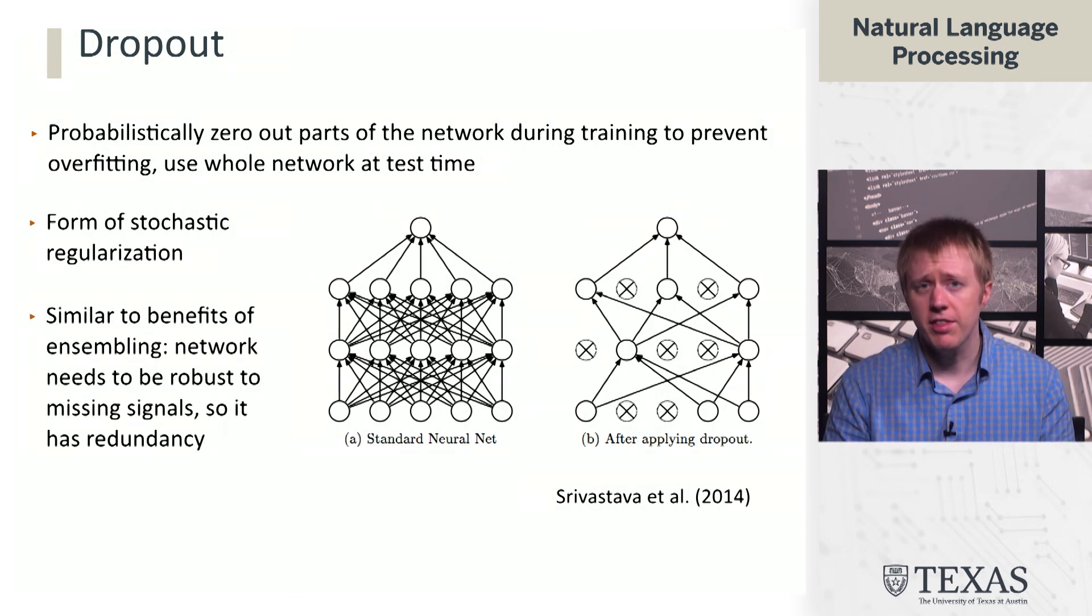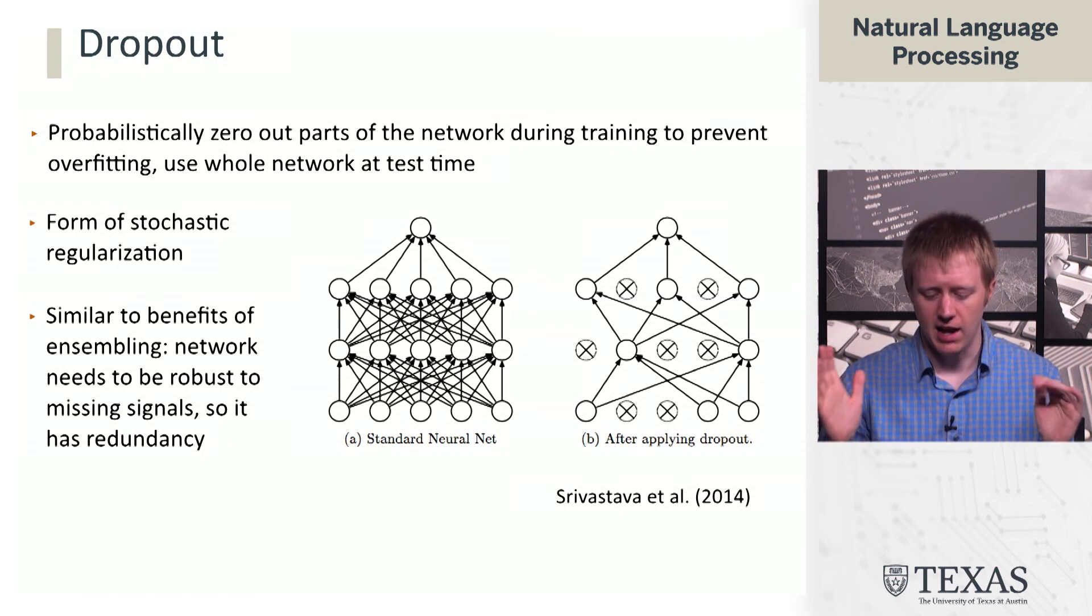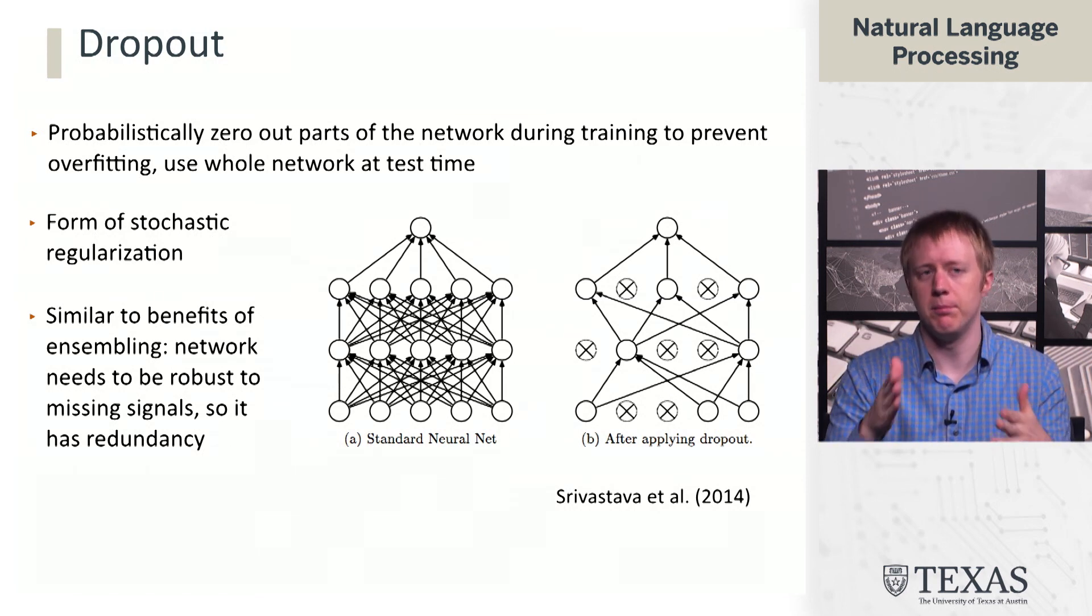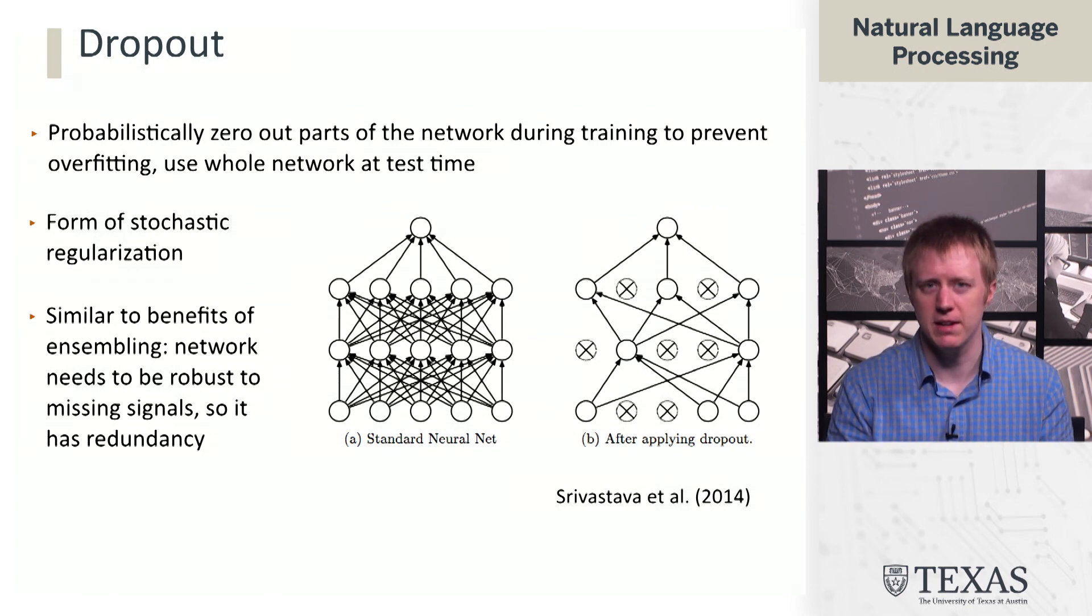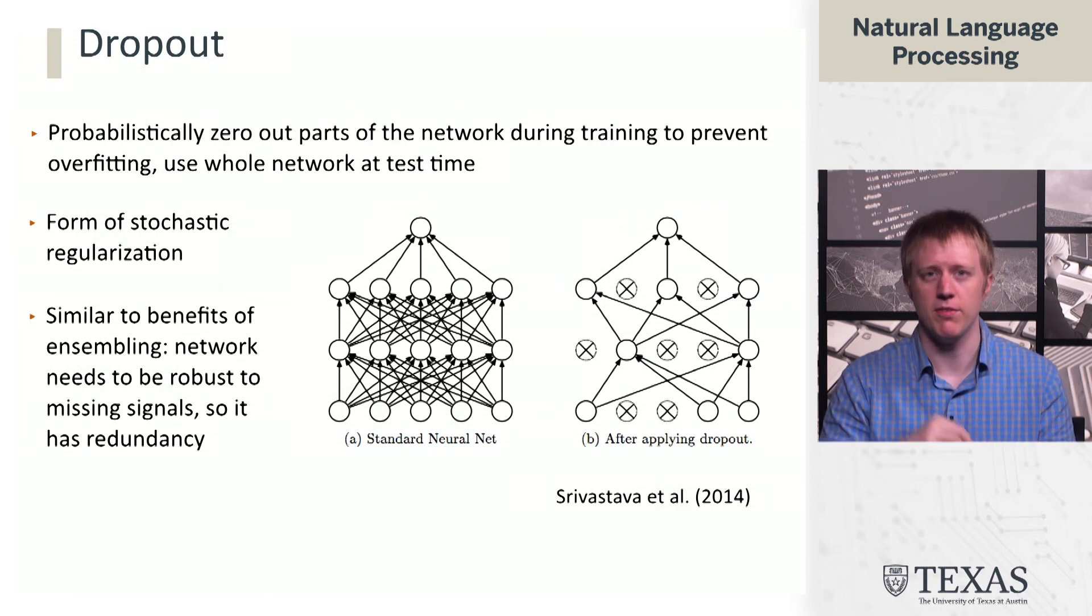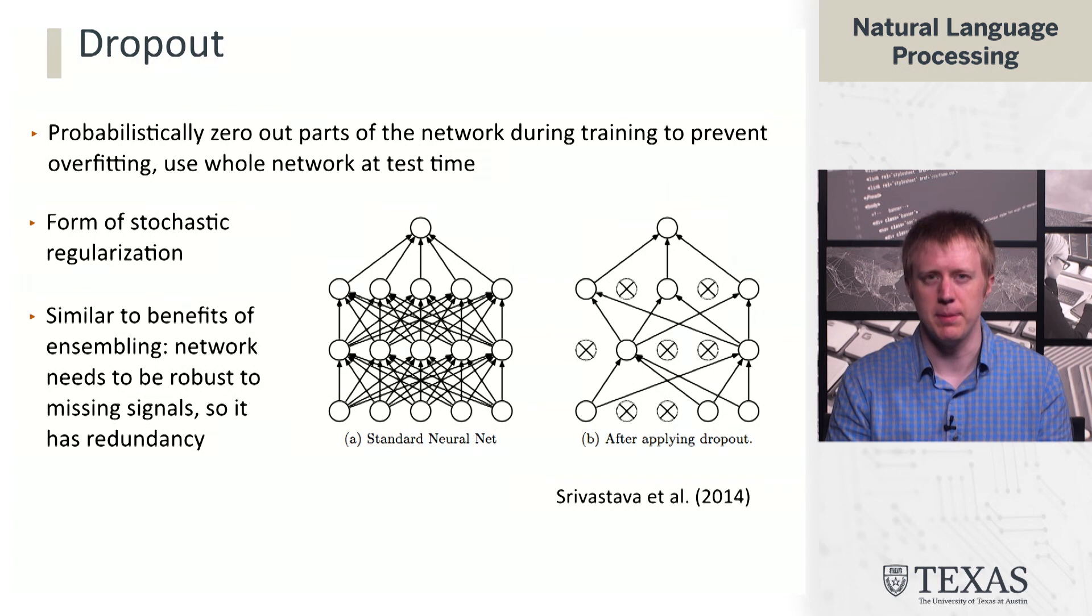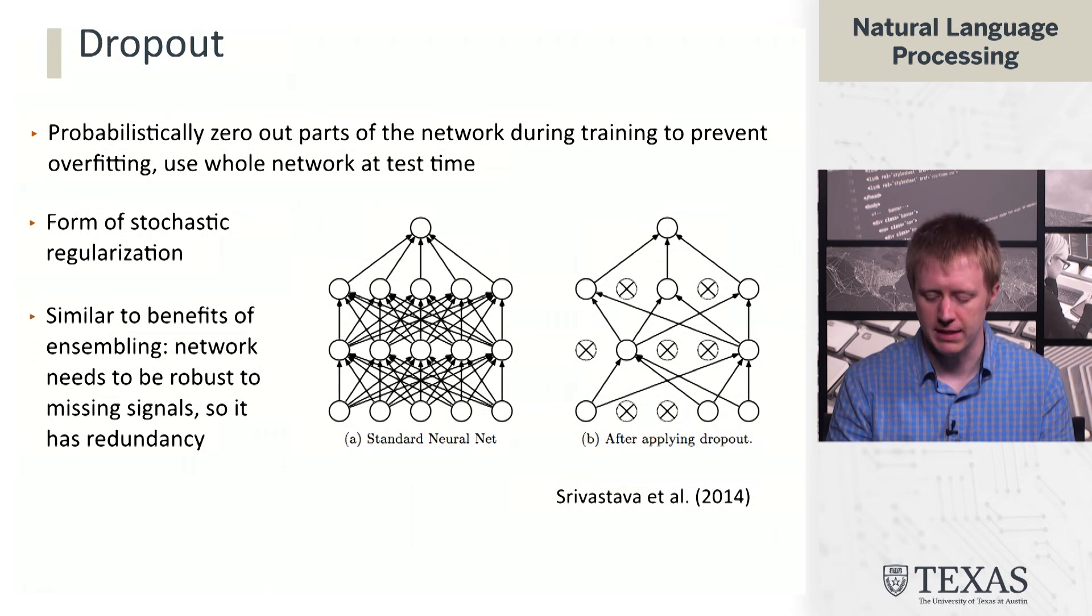Another way to think about this is connected to ensembling. Basically, what you're saying is I want any random subnetwork to be able to do well at this problem. And so then at test time, when I take the whole network, that's like having an ensemble of a whole bunch of subnetworks. And so even if some signal is missing from the input or whatever, we've got other parts of the ensemble that can maybe pick up the slack here. And this should roughly still be able to do the right thing.